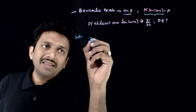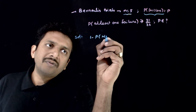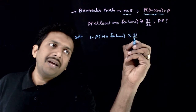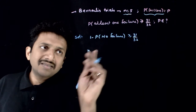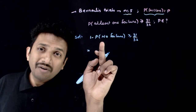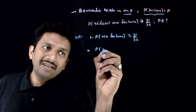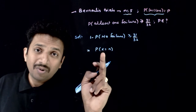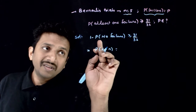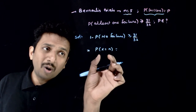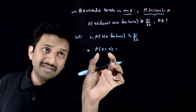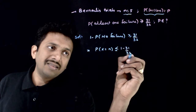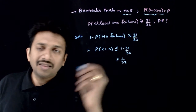The probability of at least one failure is nothing but 1 minus the probability of no failure, and this is greater than or equal to 31 by 32. This implies the probability of no failure — which is nothing but the probability of all successes — is less than or equal to 1 minus 31 by 32, that is less than or equal to 1 by 32.